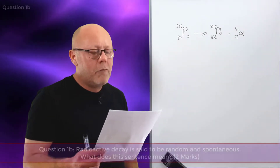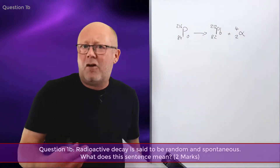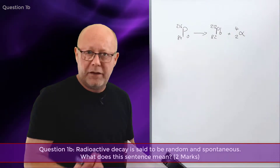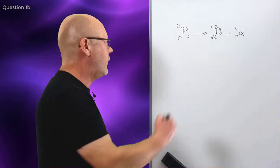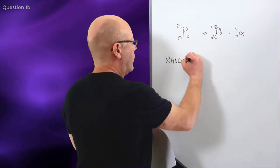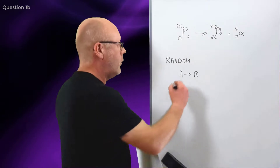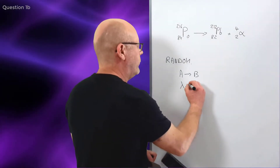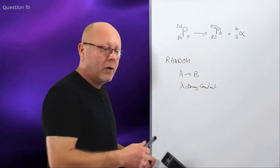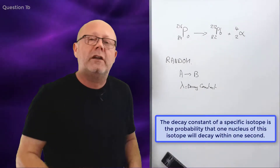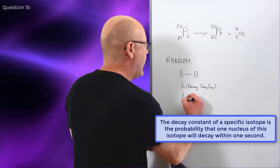Question B: radioactive decay is said to be random and spontaneous. What does this sentence mean? This is a lesson question, so you need to learn this. Nuclear decay is random and spontaneous — the key words are random and spontaneous. When a nucleus A becomes a nucleus B, this occurs with a certain probability called lambda. Lambda is called the decay constant, and it is a specific characteristic of each isotope. Every isotope has its own lambda. The decay constant is the probability that a nucleus will decay within a second.